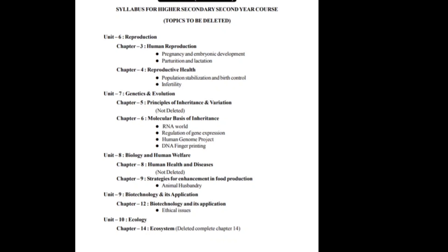In Chapter 9, 'Strategies for Enhancement of Food Production,' only the animal husbandry part is deleted. Looking at previous question papers, not many questions came from this part, so no major topic is really lost here. In Unit 9, the biotechnology part in zoology has only ethical issues deleted — just one topic from zoology's biotechnology section is deleted.